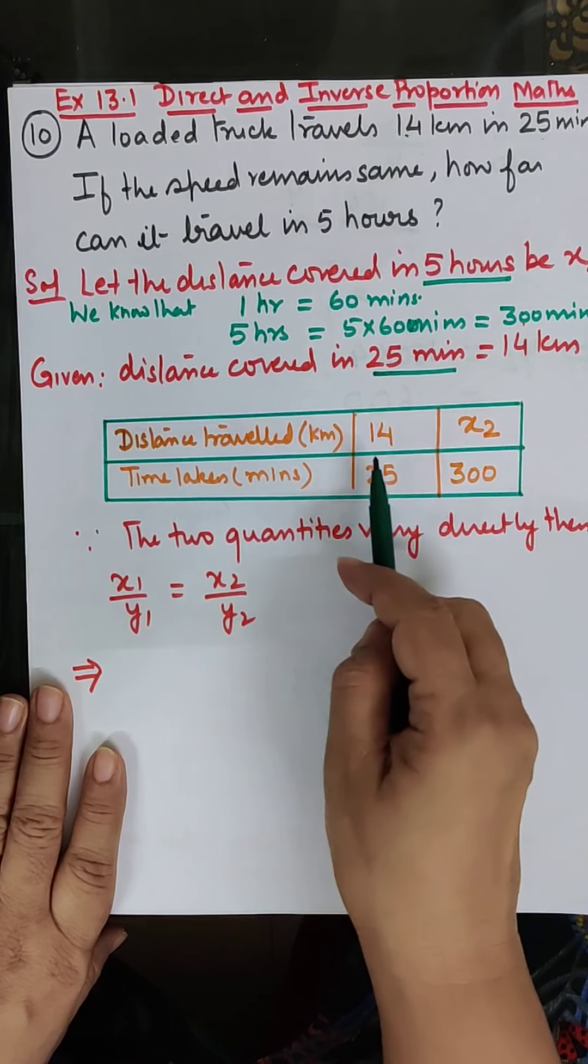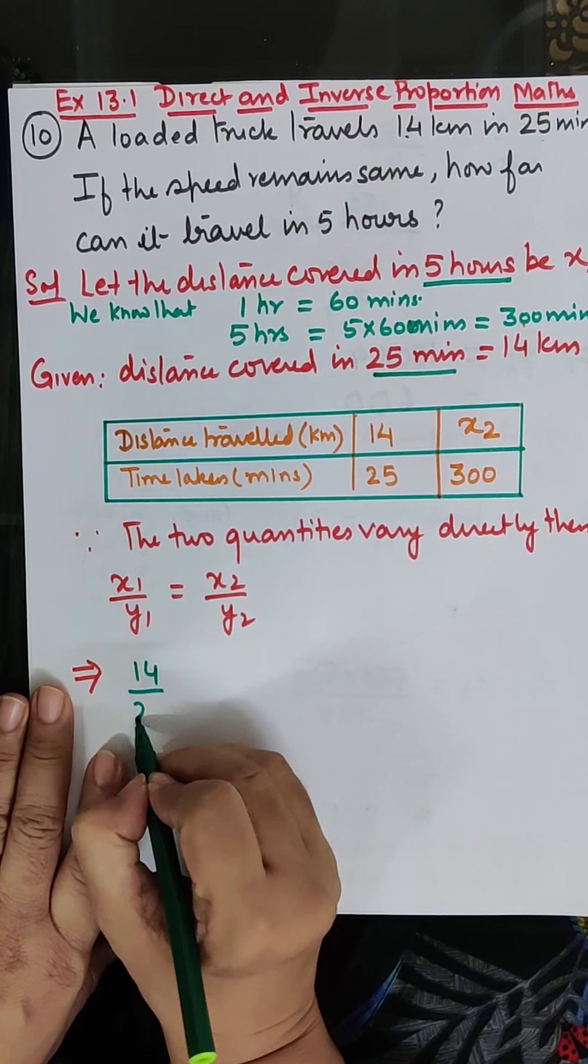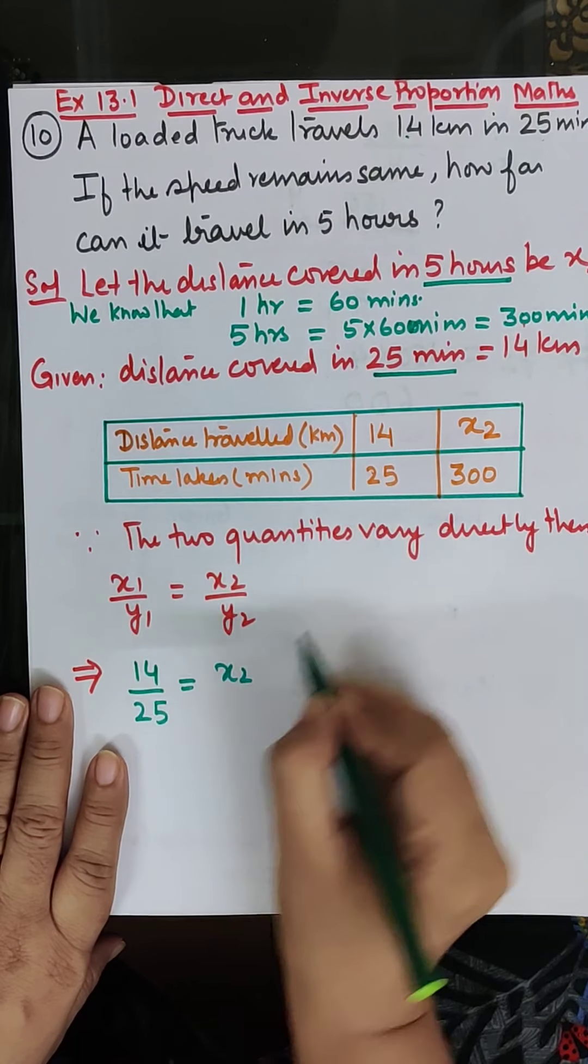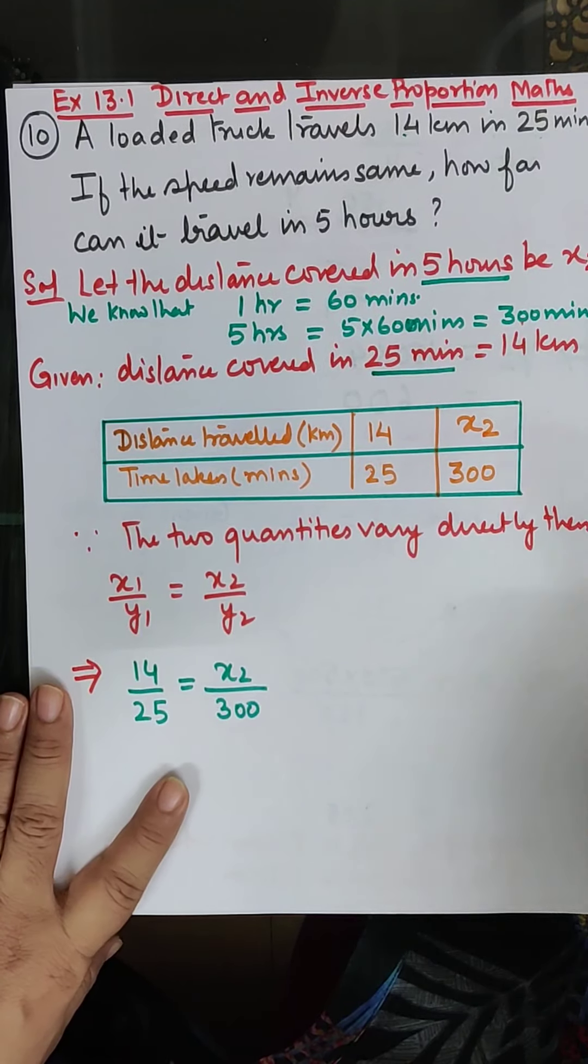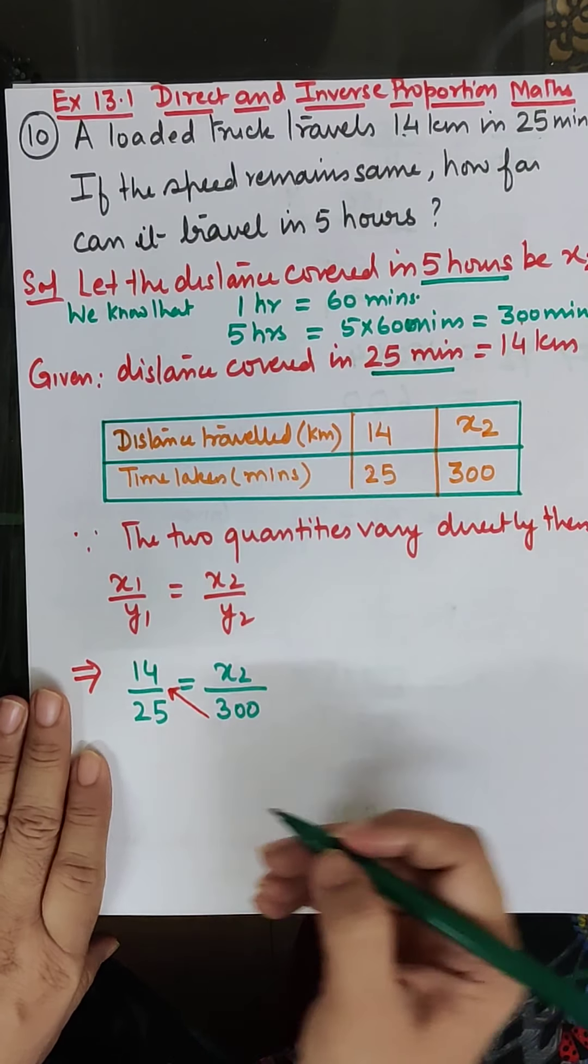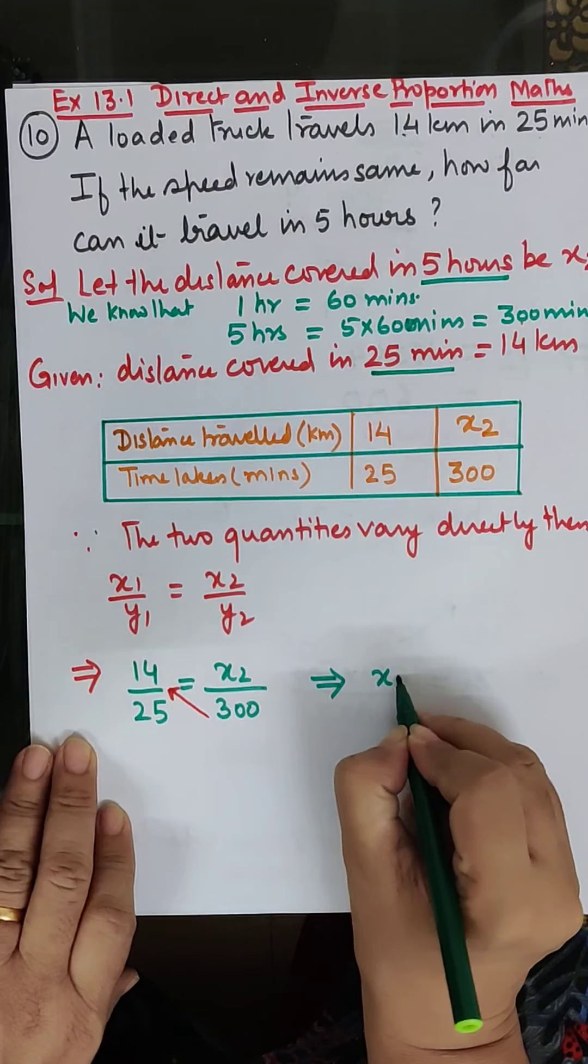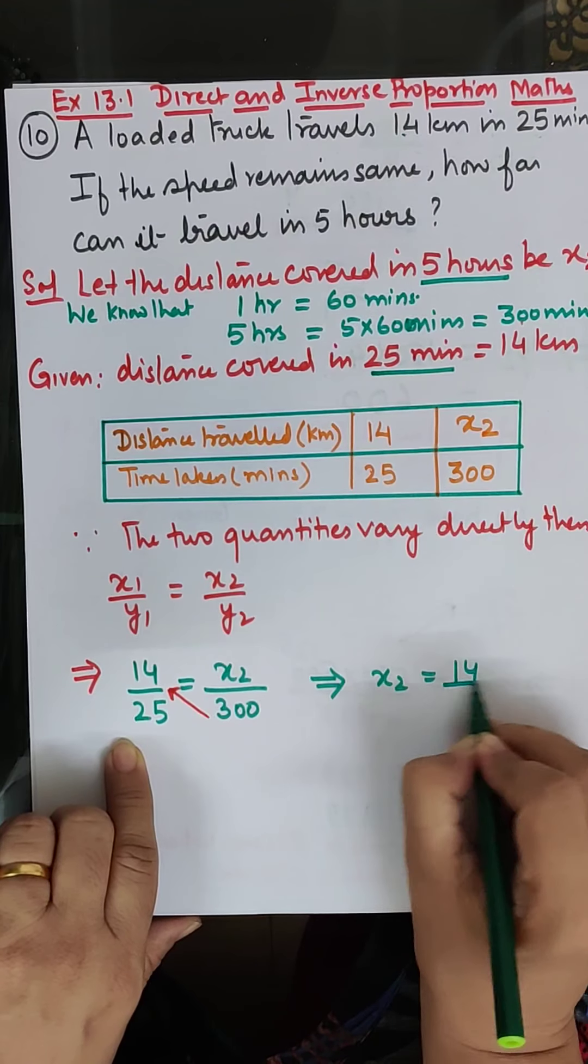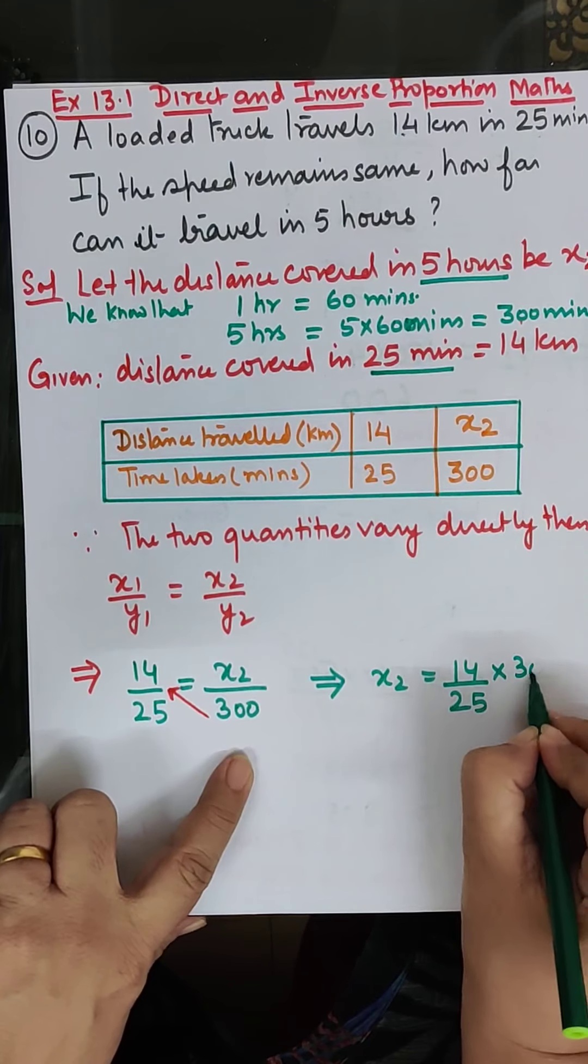x1 is 14, y1 is 25, x2 is equal to, this remains as it is, 14 upon 25 into 300.